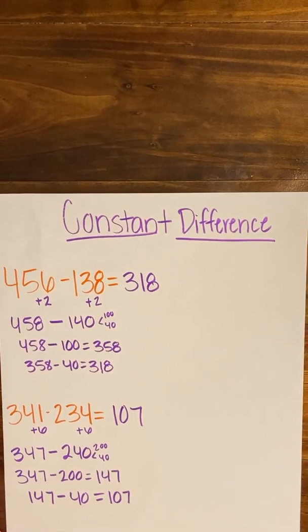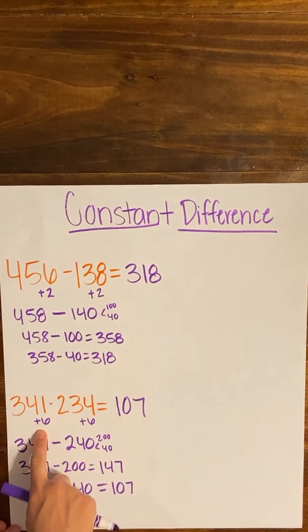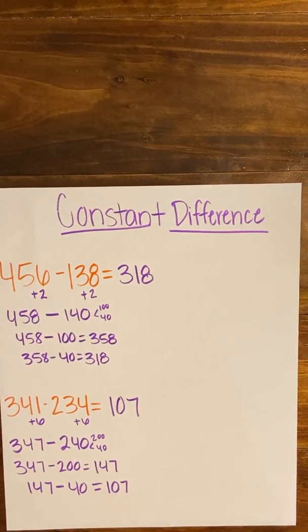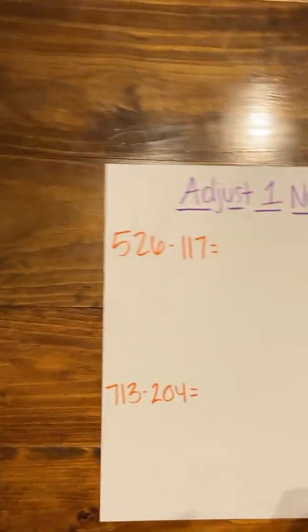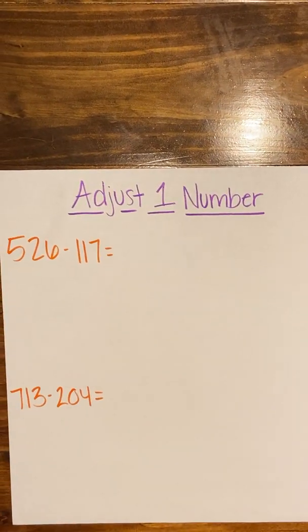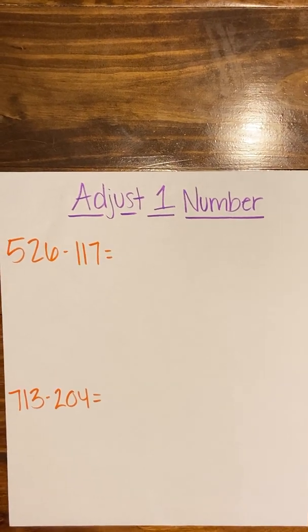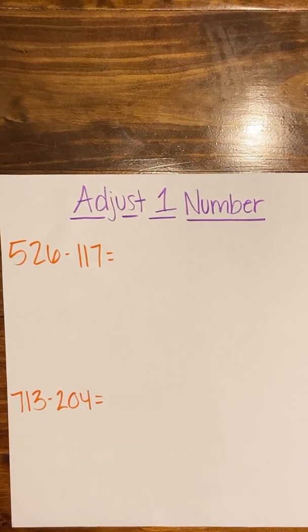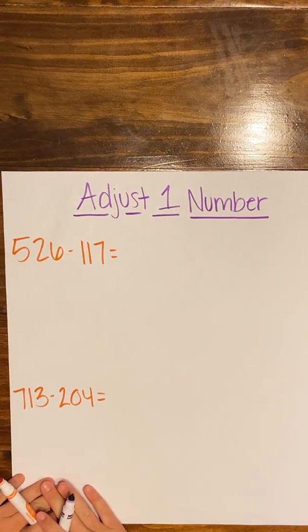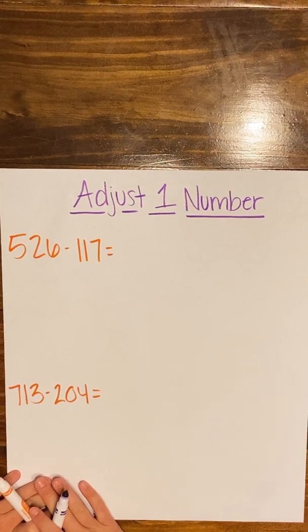Remember, whatever you do to make one number more friendly, you also do to the other number to keep it constant. Our next strategy is similar, but this time we're only adjusting one of our numbers. Unlike the constant difference strategy, only one number is changing. It's the same idea — you don't want to regroup and you want to make your numbers more friendly to work with.